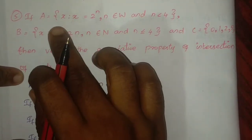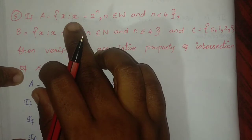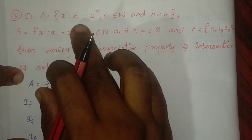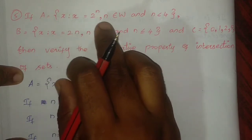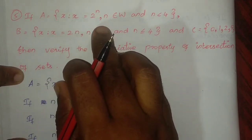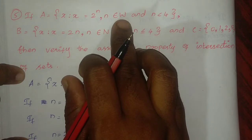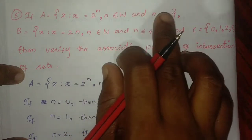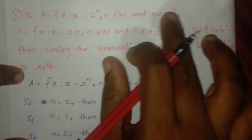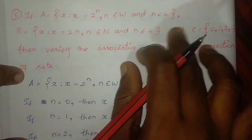Next problem: A equals the set of x such that x equals 2 to the power n, n belongs to whole numbers W, and n is less than 4.